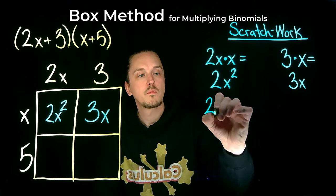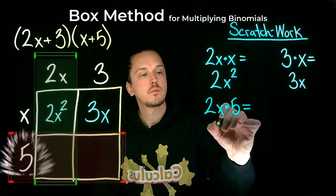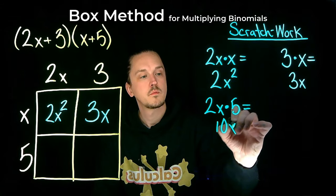Now in the bottom left box, we multiply the term of the first column, 2x, by the term of the second row, 5. This results in 10x.